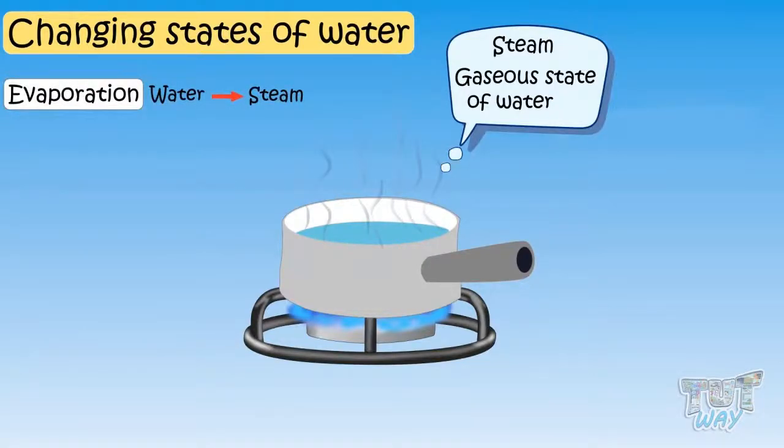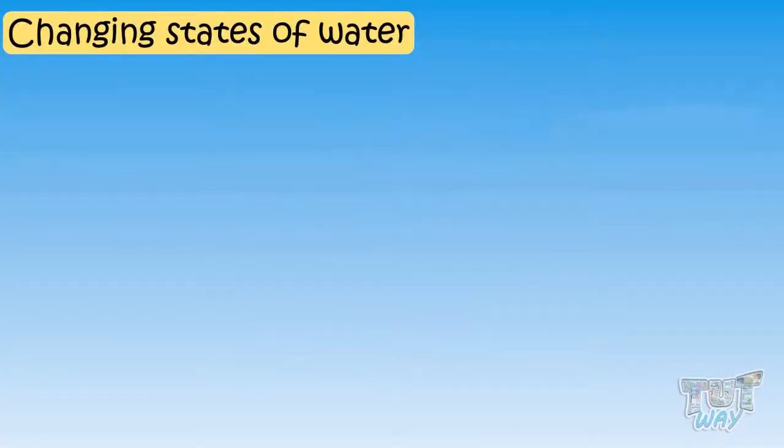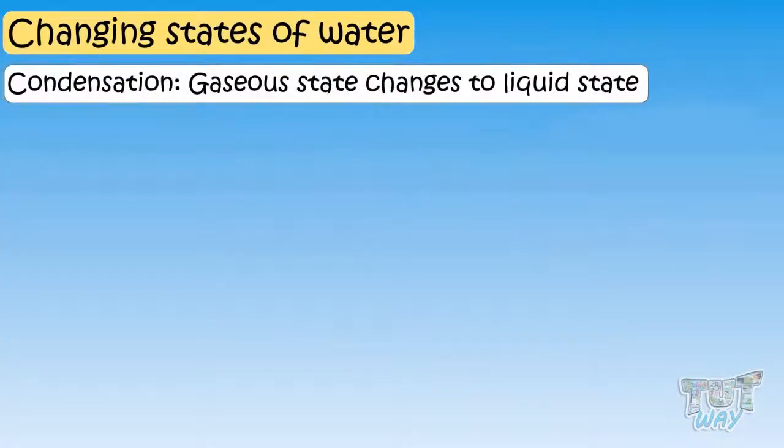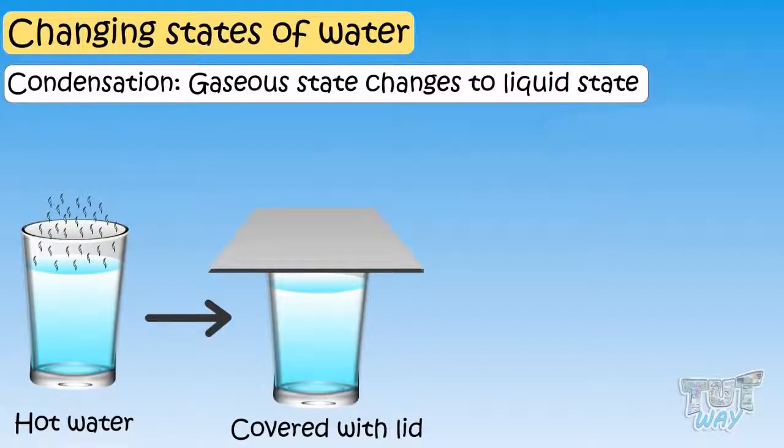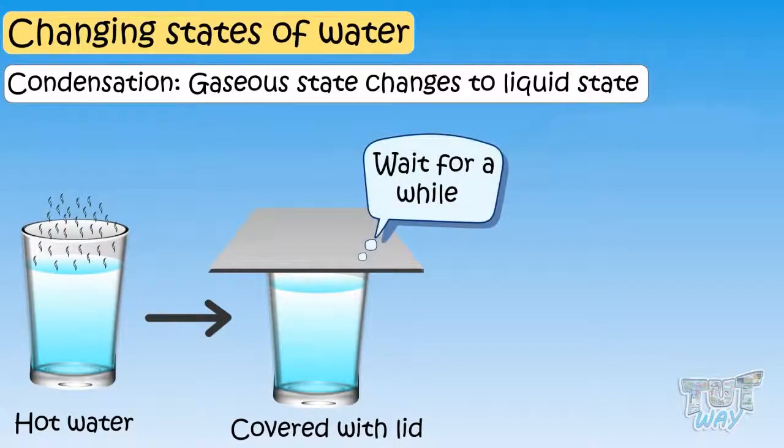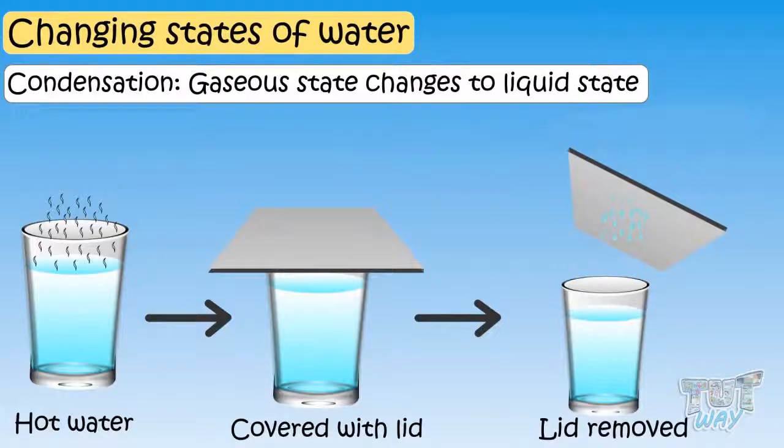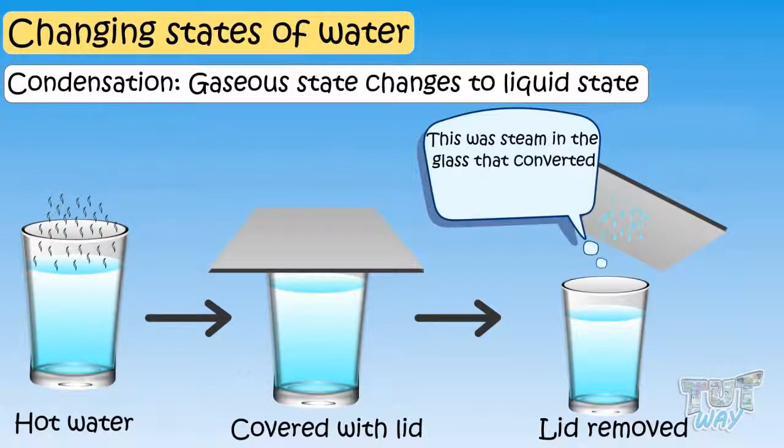Now let's see how the gaseous state of water changes back to a liquid state of water. Take a glass of hot water and now cover it with a lid. Now wait for a while. Now remove the lid and observe the side of the lid facing the hot water. You will find tiny droplets of water on it.